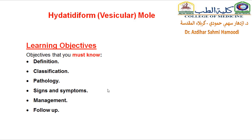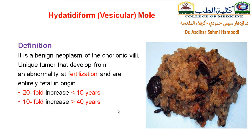Our lecture on hydatidiform vesicular mole has several learning objectives, all of which are must-to-know. The definition of hydatidiform mole is a benign neoplasm of the chorionic villi — tiny finger-like projections from the placenta. Its genetic material is similar to that found in fetal cells. It is a unique tumor that develops from an abnormality at fertilization, so it is entirely fetal in origin.